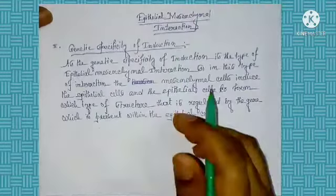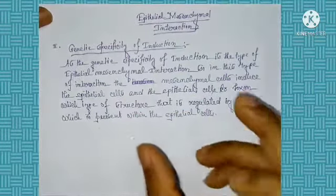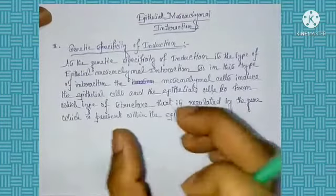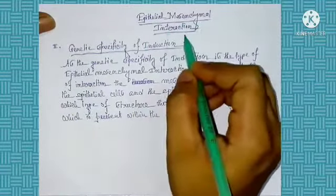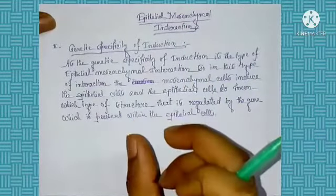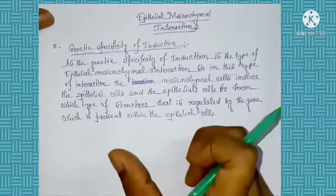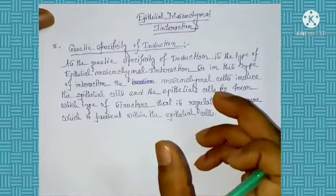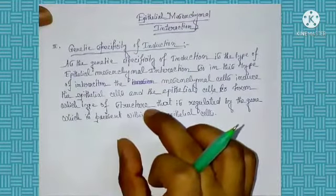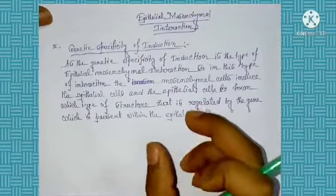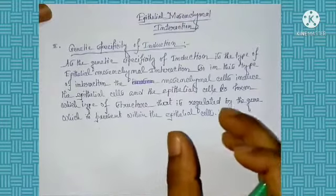Genetic specificity of induction means that in this type of interaction, the involvement of the gene takes place. In this induction, two types of cells are present: one functions as an inducer cell and another functions as a responder cell. As this is a type of epithelial-mesenchymal interaction, the mesenchymal tissue functions as the inducer cell and the epithelial tissue functions as the responder cell. After the proper interaction, a new tissue is formed from the epithelial cell, and which type of structure is formed from this tissue is regulated by the gene present in the epithelial cell.